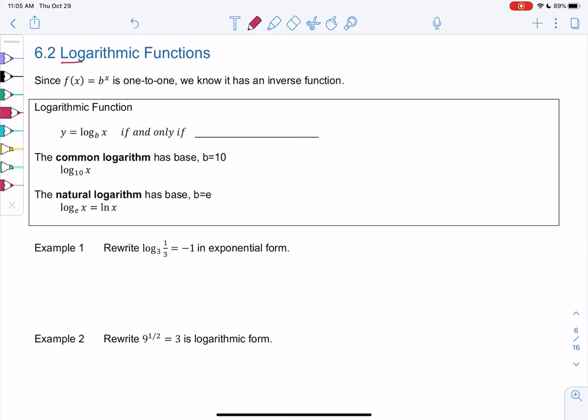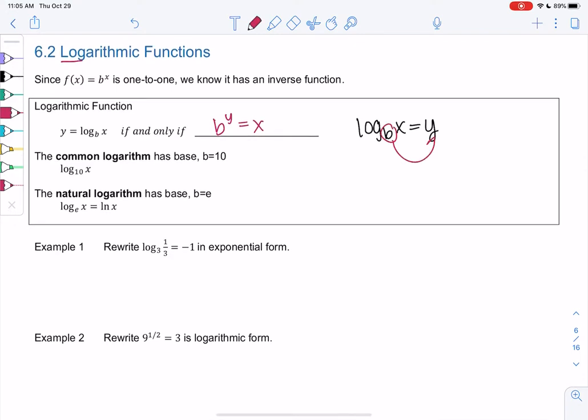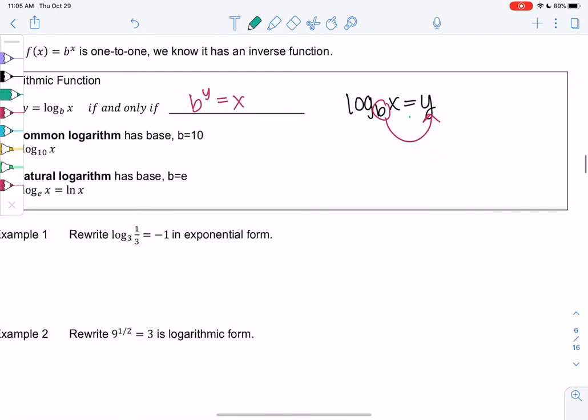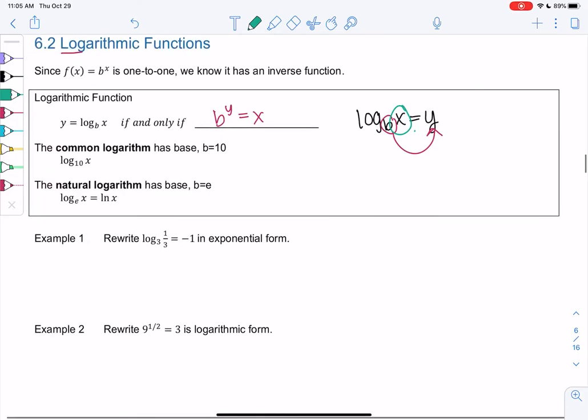So y equals log base b of x, if and only if, meaning we can go either direction, b to the y equals x. They're inverses of each other. The way I remember this is if I have log base b of y, I take base b, draw an arrow to the other side for y being my power. So b to the y equals what's inside the log. Logs solve for powers.